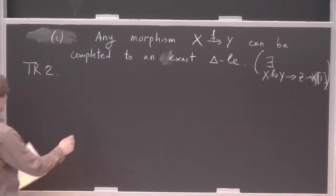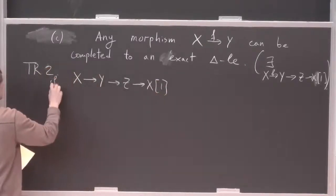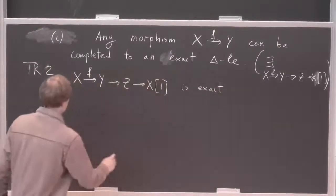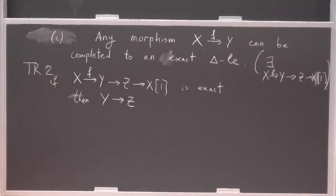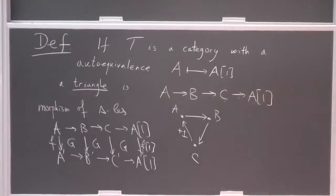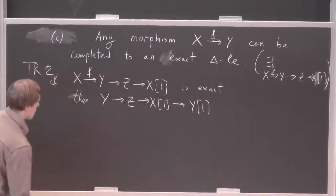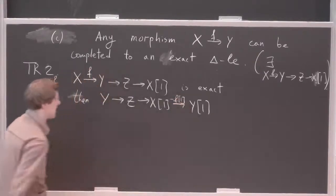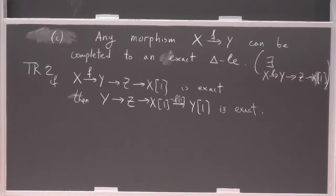The second axiom says: if you have an exact triangle, you can create a new triangle by shifting by one — there is a cyclic structure. If you rotate the picture by one-third of the full circle, this triangle is also distinguished and exact. There is one nuance: this is not f shifted by 1, but minus f shifted by 1. This is justified by something we know from the homotopy category.